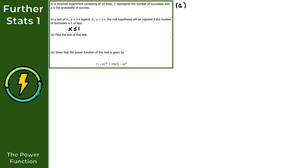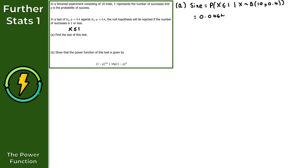The size equals the probability of rejecting H0 when it is true, which is P(X ≤ 1) given X follows a binomial distribution with parameters n=10 and p=0.4. Using the calculator with BCD and inputting the parameters correctly, the size of this test is 0.0464.